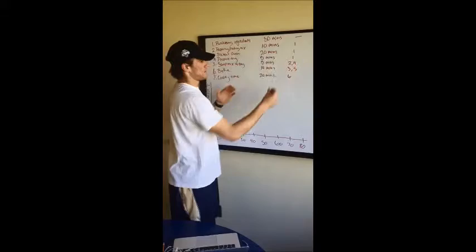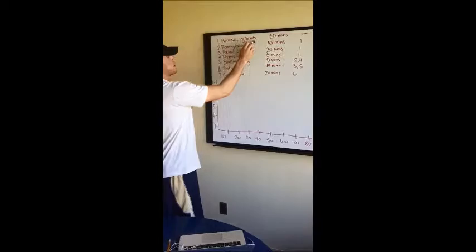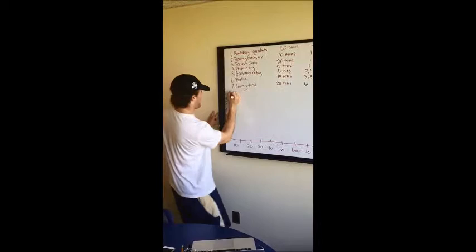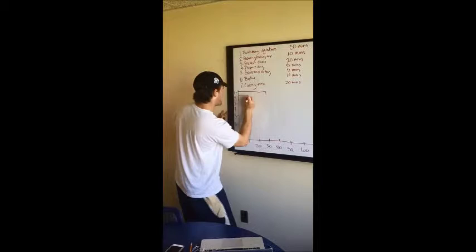So our first step is purchasing the ingredients. It takes 30 minutes. And there's nothing before making brownies than purchasing ingredients. So we're going to start that with one and that takes 30 minutes. So we're going to go from zero to 30. And there's 30. So that's to 30, zero to 30.